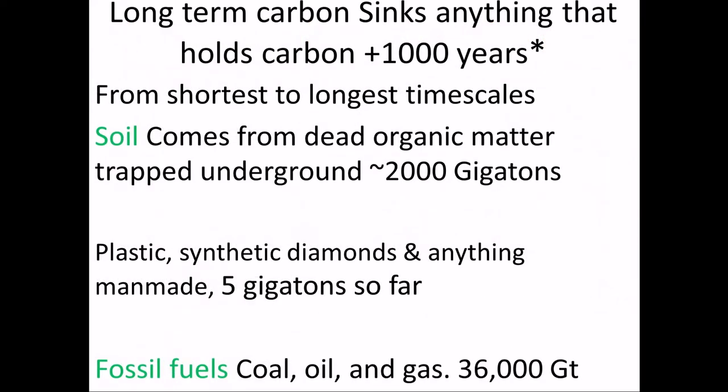Now for long-term sinks, going from shortest to longest timescale. The shortest long-term carbon sink is soil. Dead trees die, fall into the ground, get buried in the soil, and slowly decay over long periods — sometimes thousands or even millions of years. The soil actually holds about 2,000 gigatons of carbon on Earth, and that's just the upper layer near the surface, not even including the crust of the Earth.